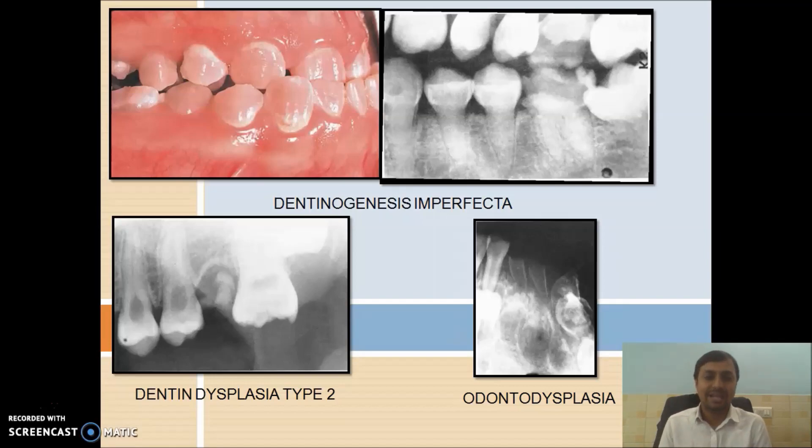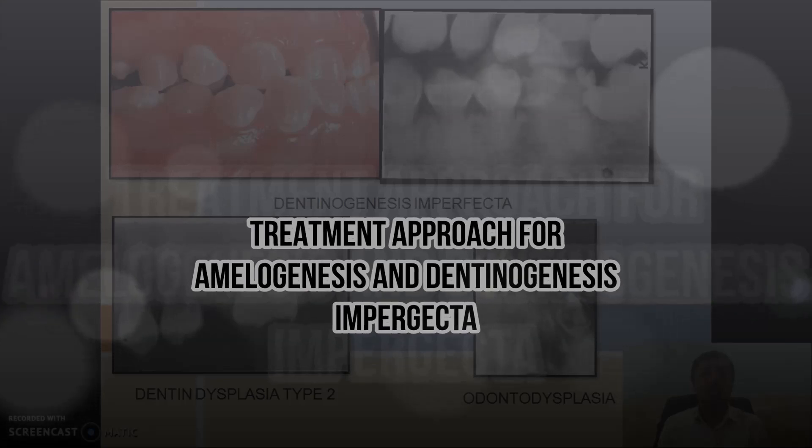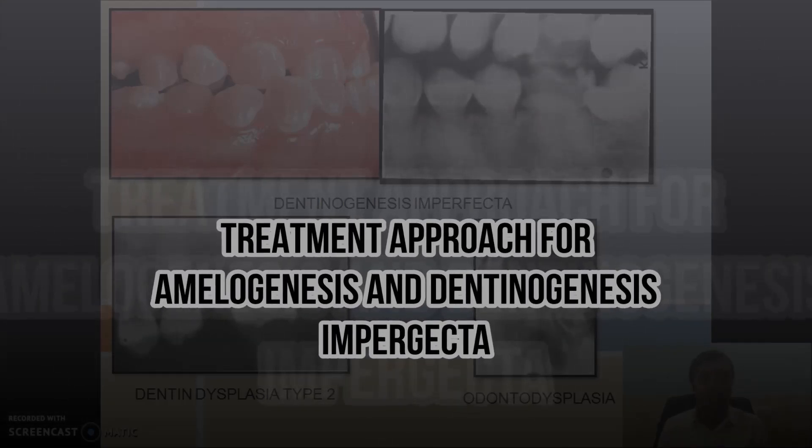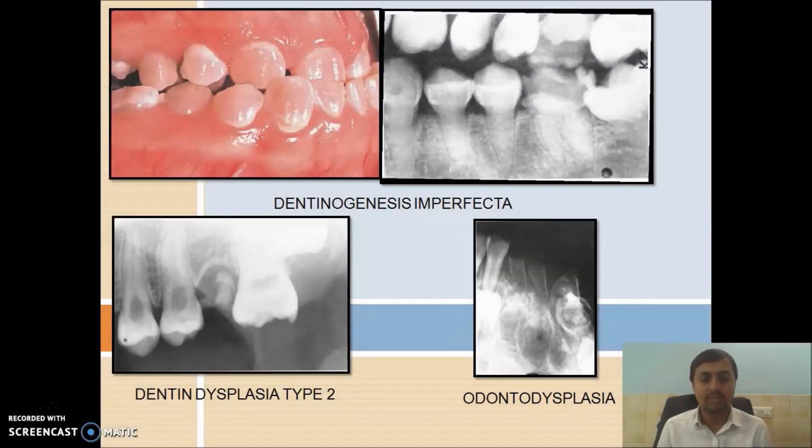How you will treat this dentinogenesis imperfecta and amelogenesis imperfecta? You have to go for full coverage restoration. If the child is in growing stage, you can go for interim restoration like stainless steel crown followed by future permanent restoration. In amelogenesis imperfecta, in mild cases or moderate cases, you can go for the enamel modification technique. That means enamel microabrasion. The technique for that was given by Croll. In which 18% HCl along with pumice is being used, applied to the tooth for 5 seconds, followed by a rubber cup prophylaxis with a fluorinated paste. The procedure is repeated until we get the proper color of the enamel. In this way amelogenesis and dentinogenesis imperfecta are treated. In case of dentin dysplasia and odontodysplasia, in most of the severe cases, the tooth has to get extracted and followed by proper prosthetic rehabilitation.